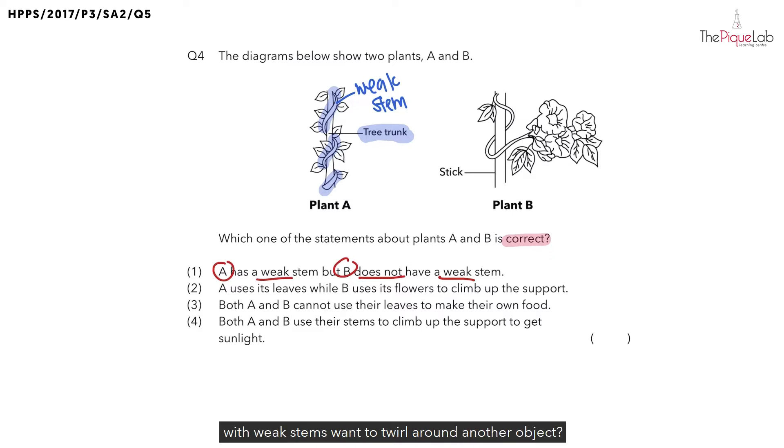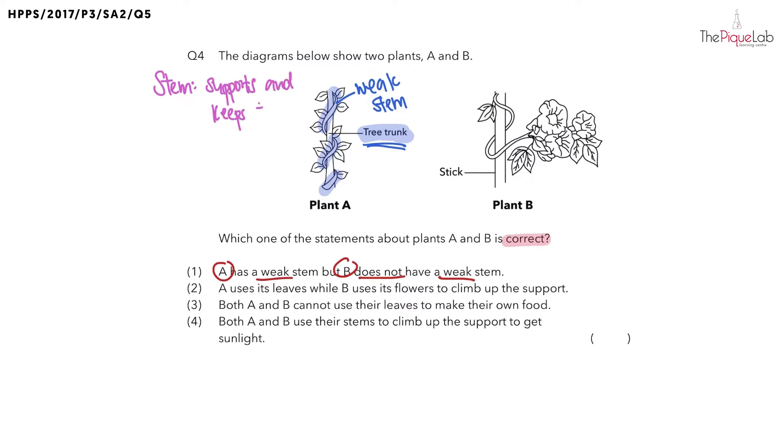So why do you think plants with weak stems want to twirl around another object? I want you to recall the function of the stem. What is the function of the stem? The stem of the plant supports the plant and keeps the plant upright.